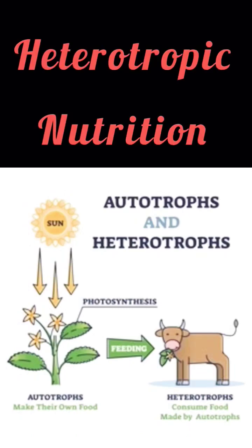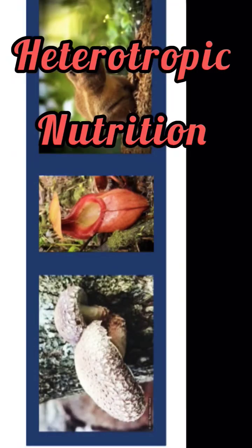Heterotrophic nutrition. The word 'hetero' simply means 'other' and 'troph' means nutrition. Organisms that don't have the ability to make their own food and depend on other plants and animals are known as heterotrophs. These animals cannot make their own food like green plants.